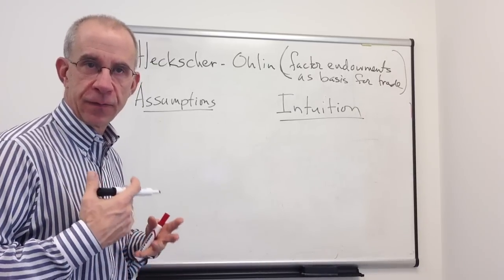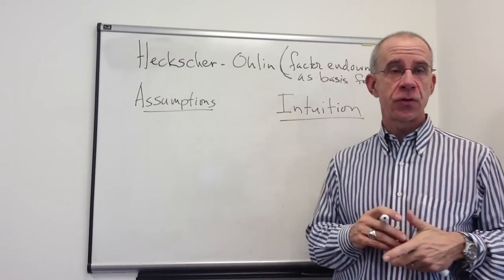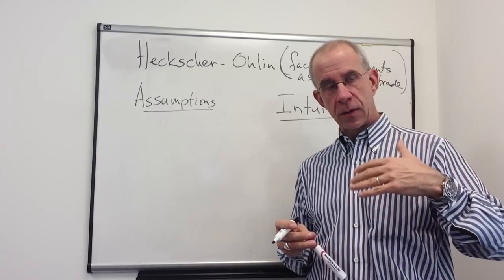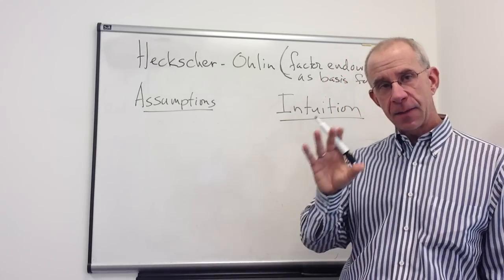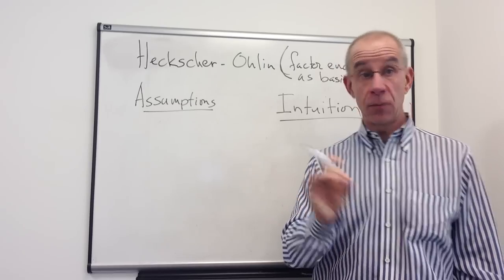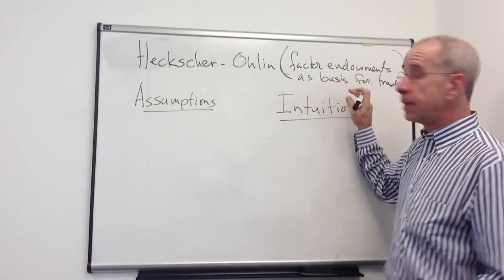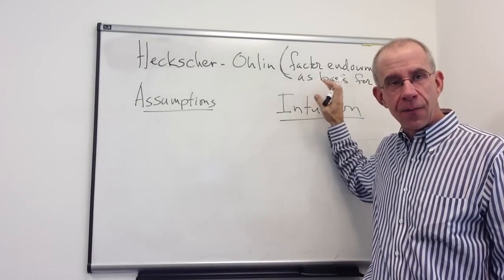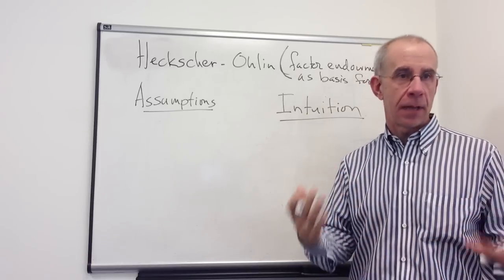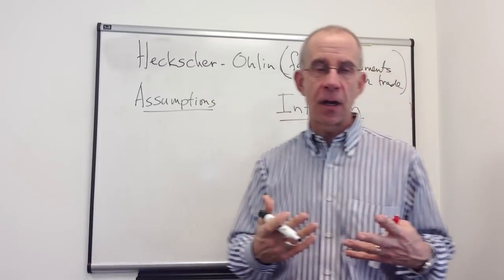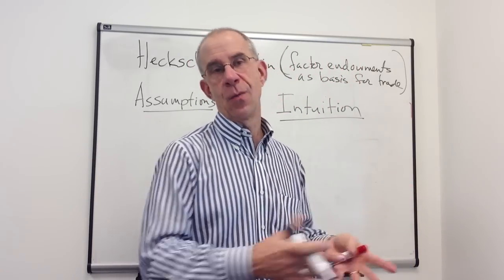One of the dominant models of international trade theory is the Heckscher-Ohlin framework. This is a version of the neoclassical model — opportunity costs increase as production rises. It looks at a particular reason for international trade: mutually beneficial trade occurring between two countries. It's going to be based on the supplies of the primary factors — capital and labor, land, skilled labor, unskilled labor — various combinations serving as the main reason why countries might want to trade with each other.